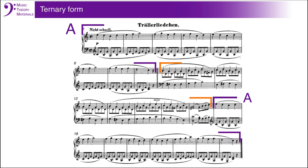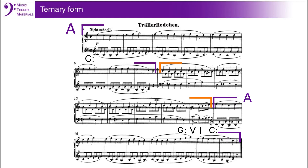The material for measures 9 to 16 looks similar to the A material, but has some very important differences. First of all, the key. The piece begins in the key of C major. At measure 8, there is a final cadence in C — an authentic cadence. At the return of the A material, it is again in the key of C major. In measure 9, however, we start seeing F sharps, and there is an authentic cadence in the key of G in measure 16. When we listen to this section, we hear the music in the key of G instead of C. Because of this difference in the key, we will call this section B and label the key change in our diagram.